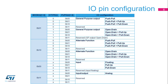Register GPIO-X OTYPER is relevant when the pin is an output; it selects open-drain versus push-pull operation. Register GPIO-X OSPEEDR selects the speed of the signal received or transmitted by the pin. And register GPIO-X PUPDR enables or disables pull-up or pull-down resistors, whatever the I/O direction.